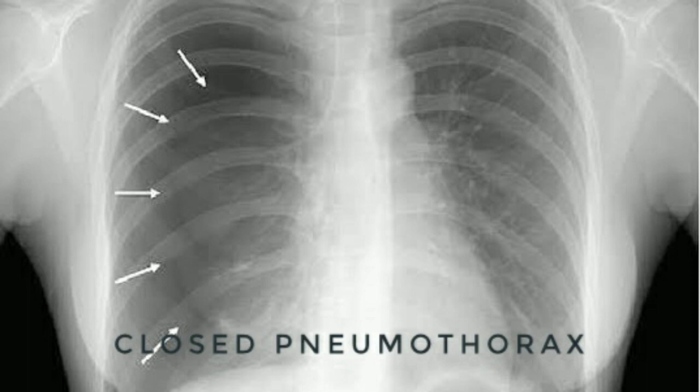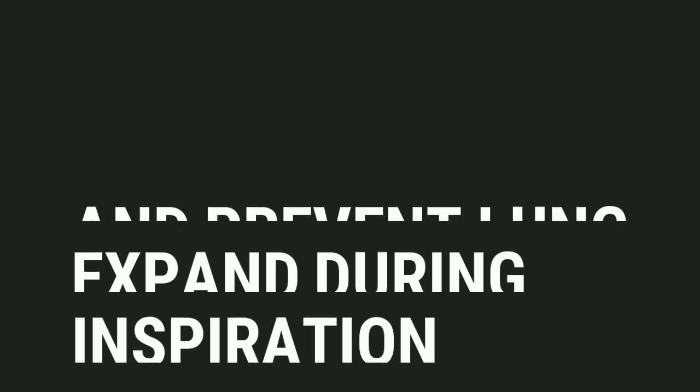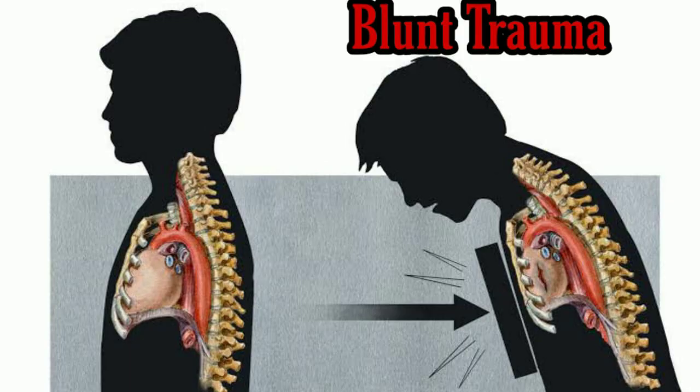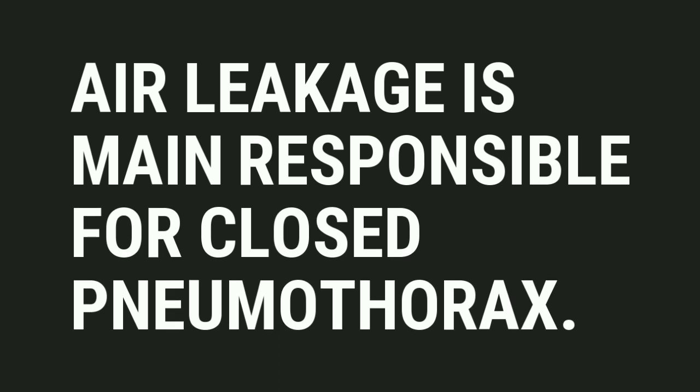Closed pneumothorax occurs when air enters the pleural cavity from within the lung. This causes an increase in pleural pressure and prevents lung expansion during inspiration. For example, when blunt chest trauma causes lung tissue to rupture, it results in air leakage, which is the main cause of closed pneumothorax.